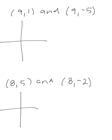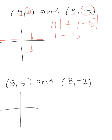Here are two examples — you can pause the video and see how you do. The first one is (9,1) and (9,-5). The x-values are the same, so we're looking at the y's and the vertical distance. We have (9,1) right around here and (9,-5) right around there. You're going to have the absolute value of 1 added to the absolute value of 5, because we've got to cross over the x-axis. To go from 1 to 0 is a distance of 1, then we go down to negative 5 — so 1 plus 5 is 6 units.